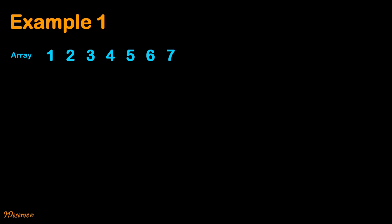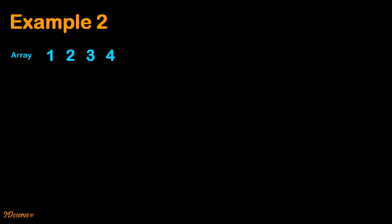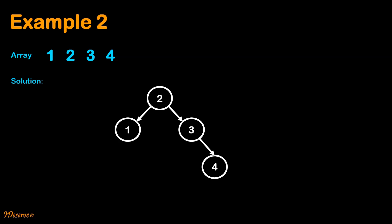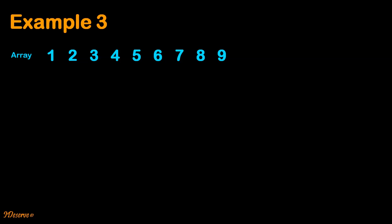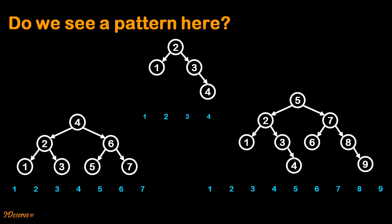Now back to our original problem of creating a balanced binary search tree from a sorted array. Let us try to understand it through some examples. Looking at the examples, do we see a pattern here?